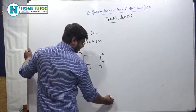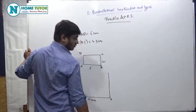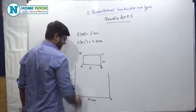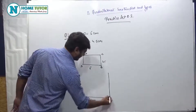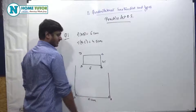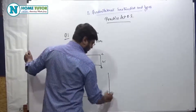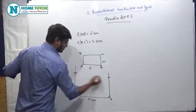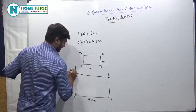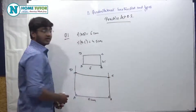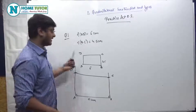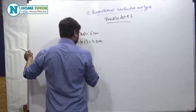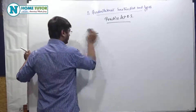अब यहाँ से 90 degree के ऊपर एक line draw कीजिए — क्योंकि rectangle की sides हमेशा perpendicular होती हैं. यह भी 90 degree के ऊपर एक line draw कीजिए. AB = 6 cm draw किया, BC की length 4.5 है — so 4.5 पर एक arc खींचें, यहाँ पर भी 4.5 पर arc खींचें. अब यह जो points मिले हैं उन्हें join करें — यह हो जाएगा D, यह C, और यह बन जाएगा rectangle ABCD.